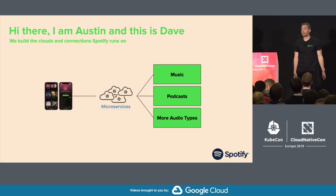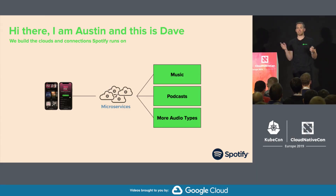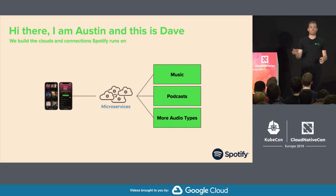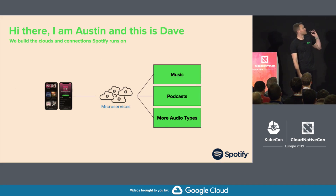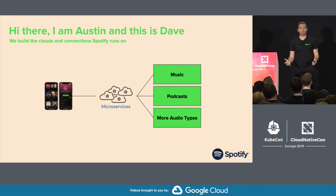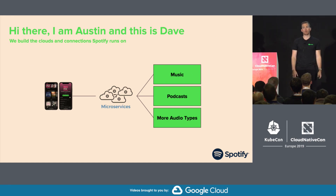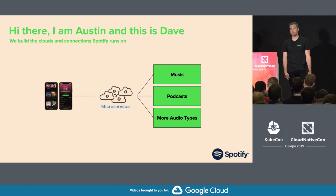First, I'll start by introducing us. I'm Austin, and this is Dave. We build infrastructure at Spotify. Basically, we build the boxes that tens of thousands of services go in and all the lines on the architecture diagrams that connects them, and basically figure out how that all gets to the back-end data stores and make all of that work. We have music and podcasts and all sorts of things — just showing you where we sit within the Spotify ecosystem.